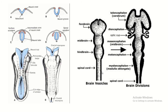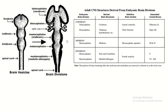The caudal portion of the neural tube is converted into the spinal cord. Regarding the structures derived from the neural tube: the prosencephalon — specifically the telencephalon — is converted into the cerebrum; the diencephalon is converted into the thalamus and hypothalamus, with cavities forming the lateral ventricles and third ventricle.